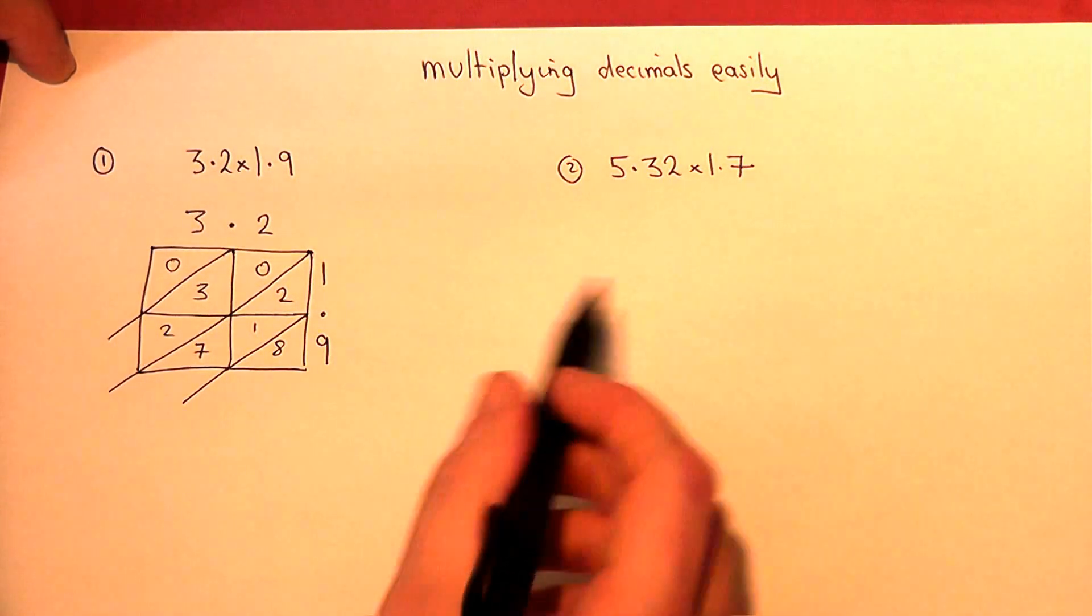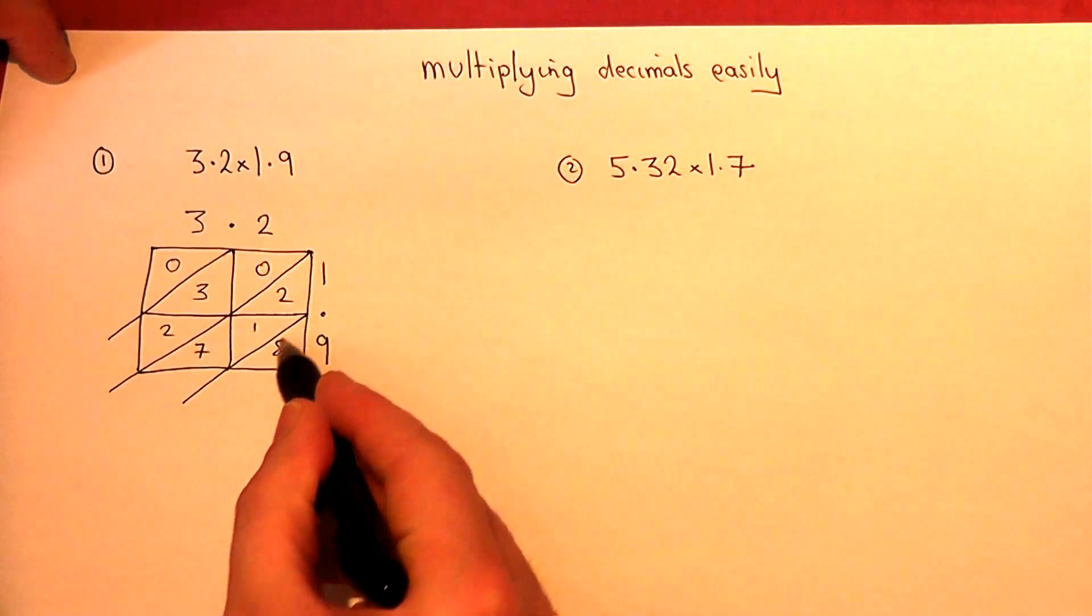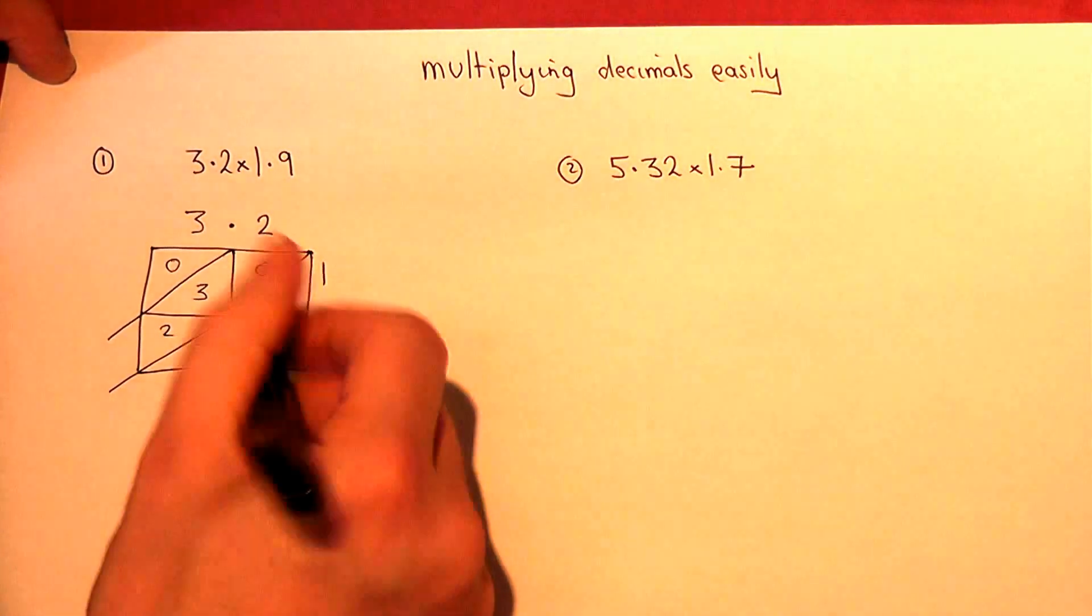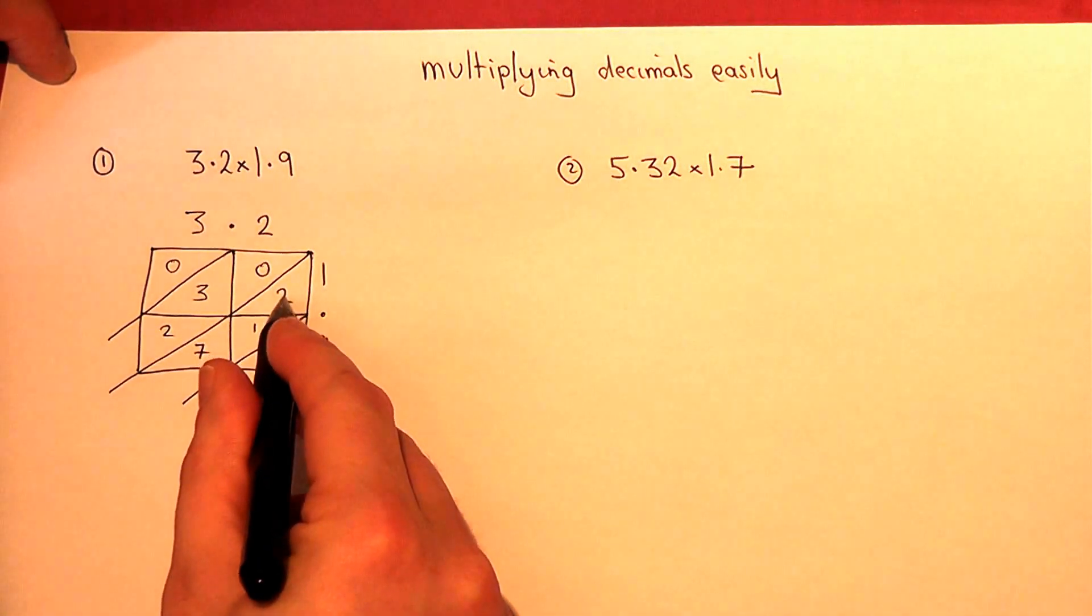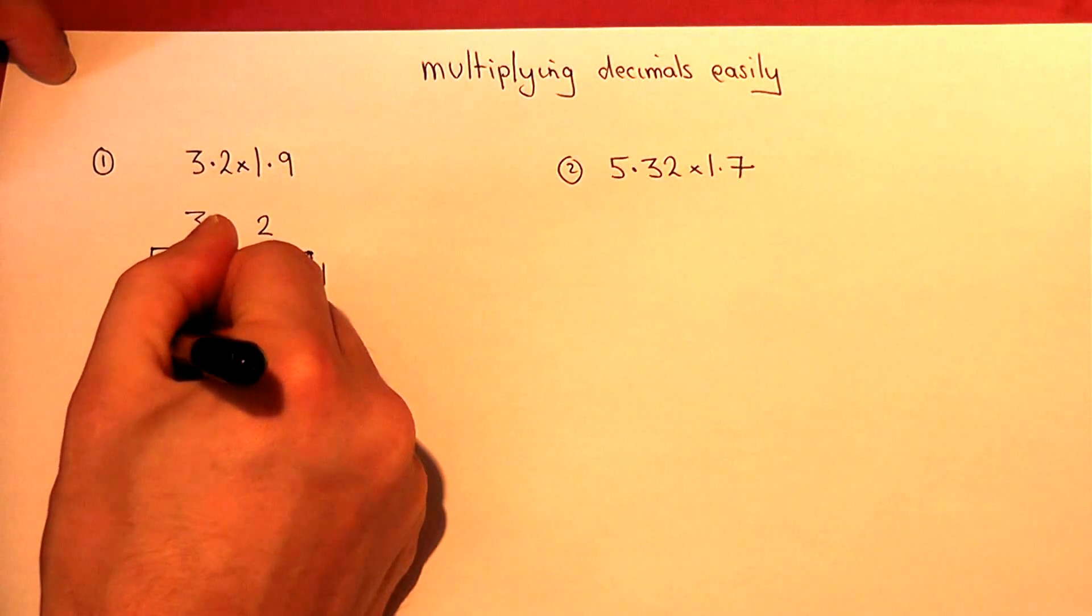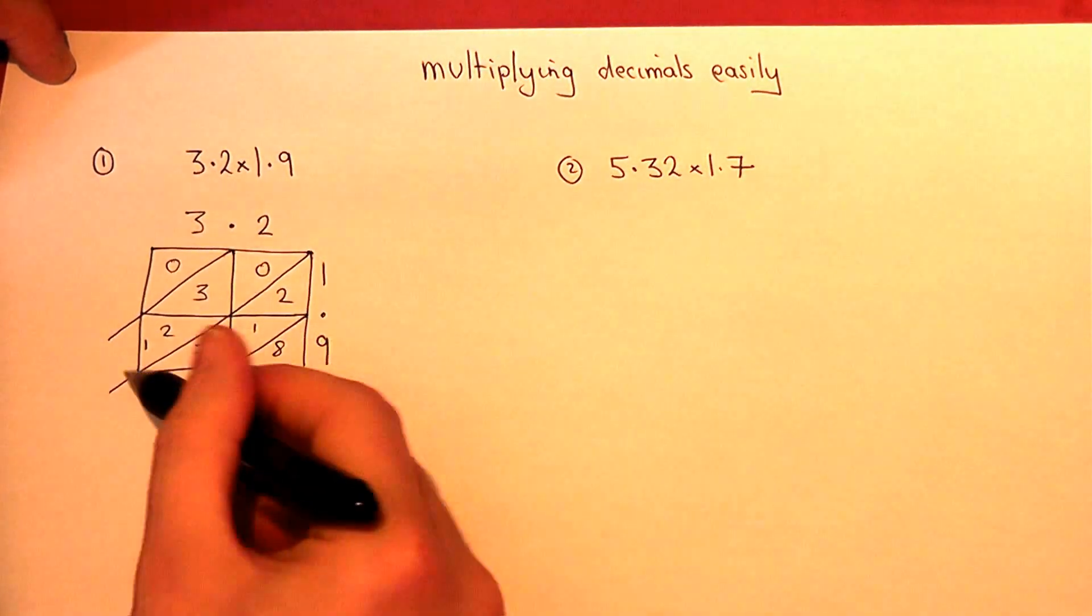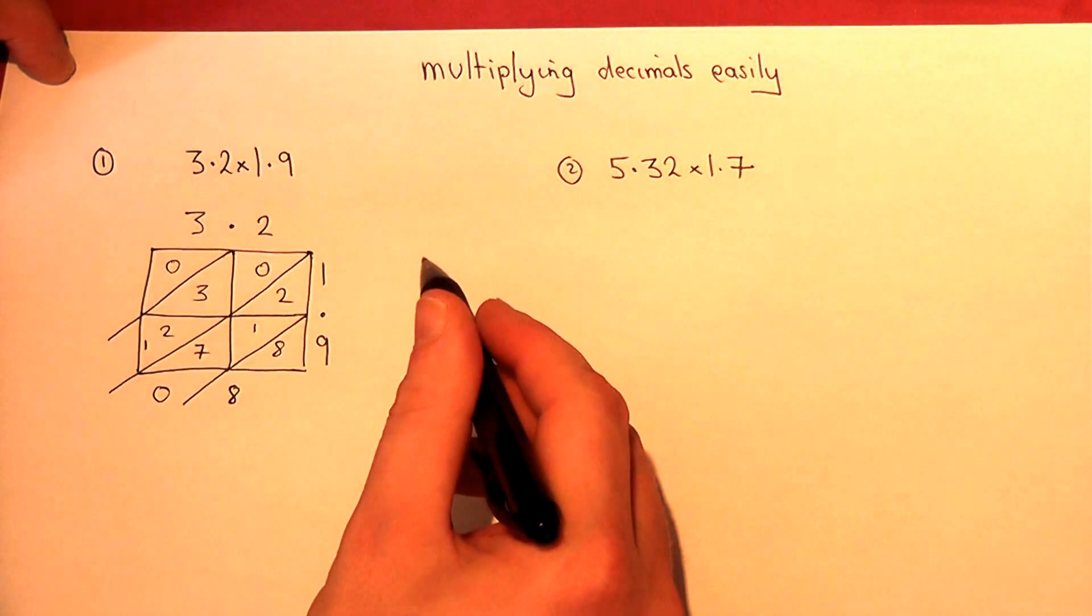I then add up each of the diagonals, starting in the bottom right corner. So, an 8. 7, 8, 9, 10. That's no units and 1 ten. So, the 10 carries on across to the next diagonal.